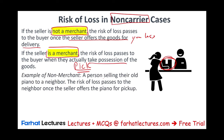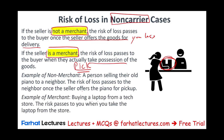Example of a non-merchant: a person selling their old piano to a neighbor. The risk of loss passes to the neighbor once the seller offers the piano for pickup — once they tell you the piano is ready, it's your risk. In contrast, buying a laptop from a tech store, which is a merchant, the risk passes to you when you physically take the laptop from the store.